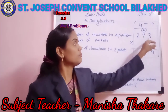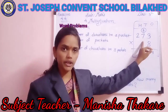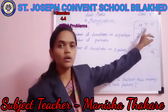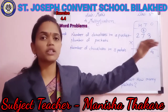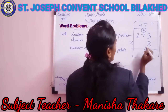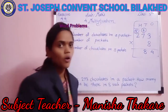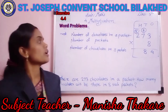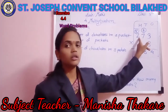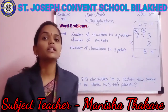Next, come to the tens column. Eight 7s are 56. We add the carryover 2: 56 plus 2 is 58. We write 8 and 5 is carried over to the hundreds column. Next, come to the hundreds column. Eight 2s are 16. 16 plus 5 is 21.